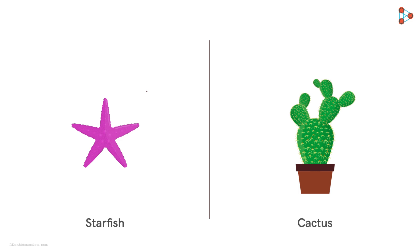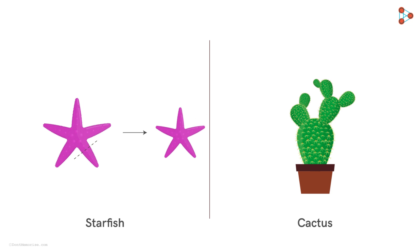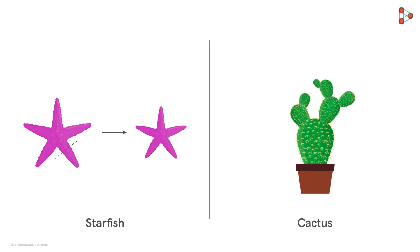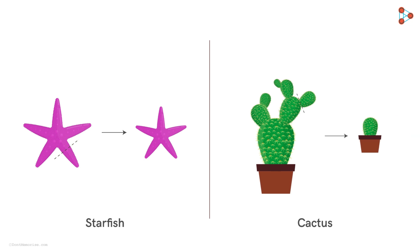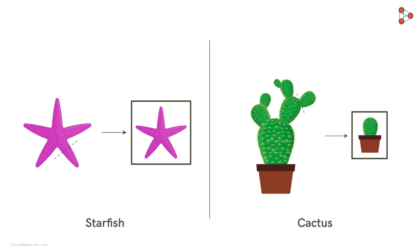Starfish show a startling property of regeneration — they can simply regrow their lost limbs to the complete length. On the other hand, some cacti can clone themselves with the help of fragments which drop off their branches. The fragments can take root and develop into new genetically identical cacti. These regenerating and cloning strategies are both employed by mitosis, which we have already seen in depth in the previous video.